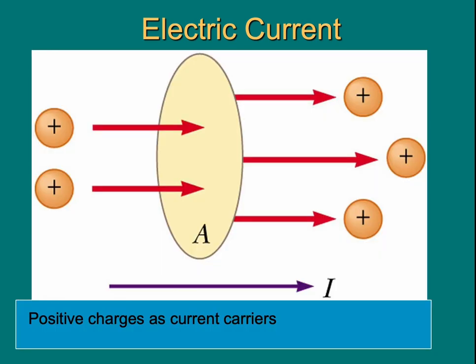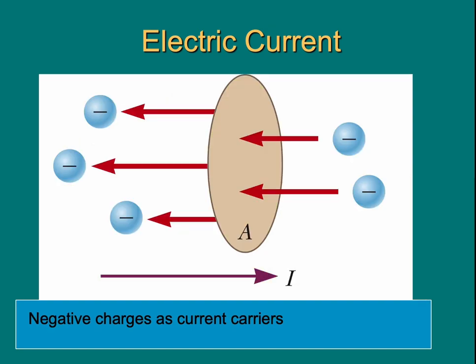Positive charge can carry current. When positive charge moves and generates current, the direction of current is the same as the motion of positive charge. Negative charge can carry current too. When negative charge moves through a cross-section and generates current, the direction of current is in the opposite direction of negative charge moving.